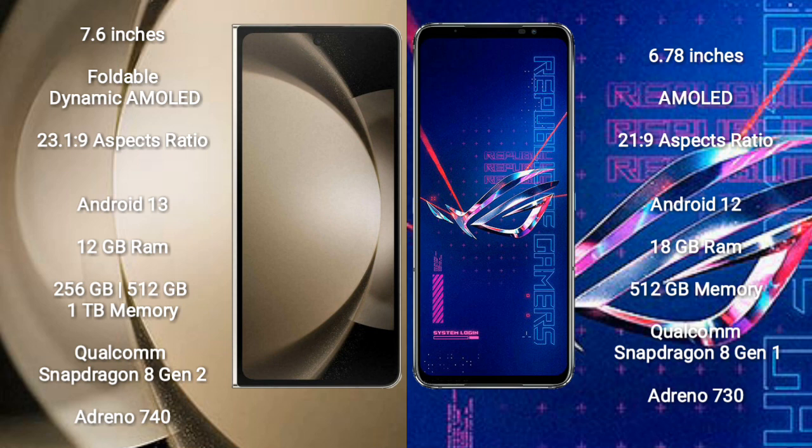Samsung Galaxy Z Fold 5 comes with 12GB RAM and 256GB, 512GB, or 1TB internal storage, a Qualcomm Snapdragon 8 Gen 2 processor, and Adreno 740 GPU. Asus ROG Phone 6 Pro comes with 18GB RAM and 512GB internal storage, a Qualcomm Snapdragon 8 Gen 1 processor, and Adreno 730 GPU.